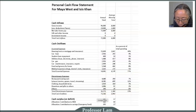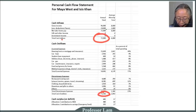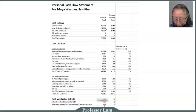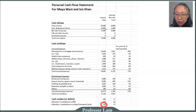Now we can look at how Maya and Isis are doing. Taking their income of $72,000 minus their expenses — inflow minus outflow — gives a surplus of $685. What do they do with that money? Of the $685 surplus, they put $480 into their 401k retirement account, and the remaining $205 goes into their savings account to build up their emergency fund.